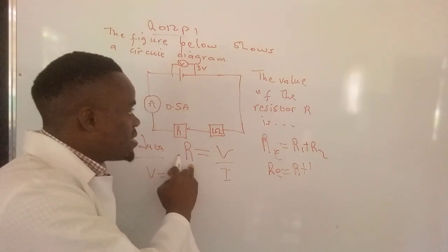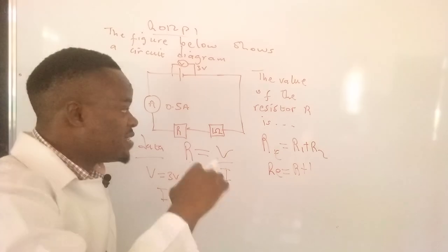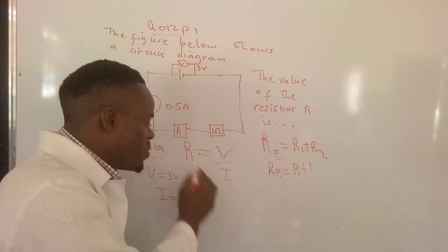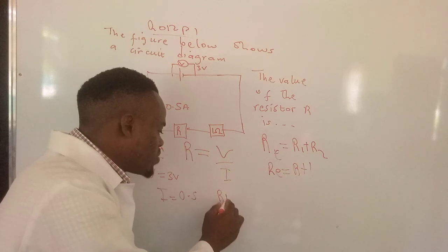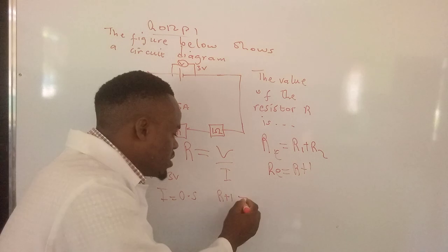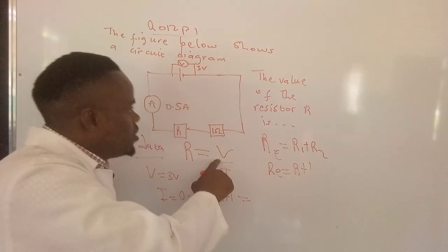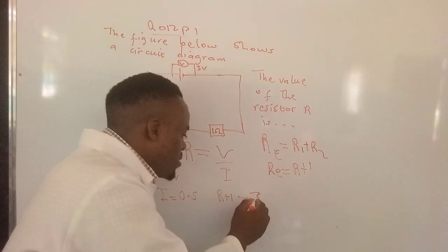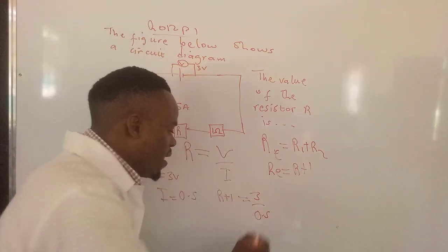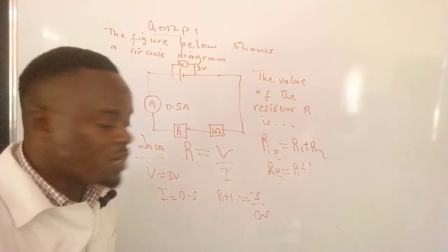So here, the total resistance of the entire circuit is R plus 1. So that's what I will write inside: R plus 1. I've substituted RE with these values. This is equal to voltage, which is 3, divided by current, which is 0.5.